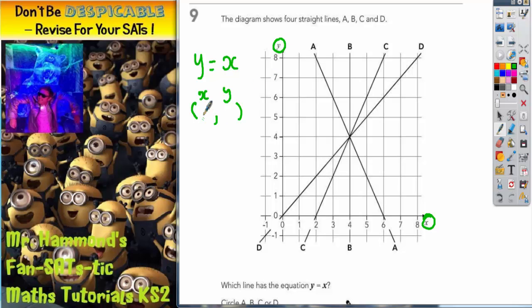So coordinates where both of these numbers are equal would be things like 0, 0, 0 along 0 up. We could have 1 along 1 up. We could have 2 along 2 up. We could have 3 along 3 up. 4 along 4 up. And you get the idea. This is when the Y coordinate is equal to the X coordinate.